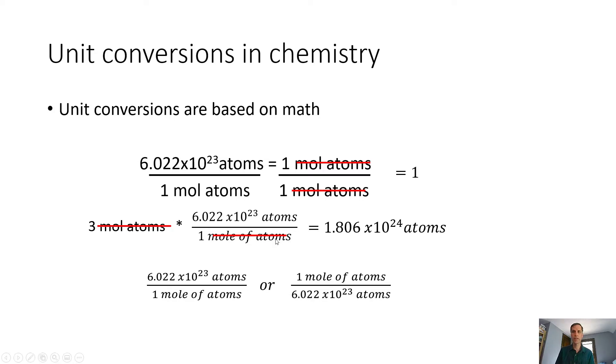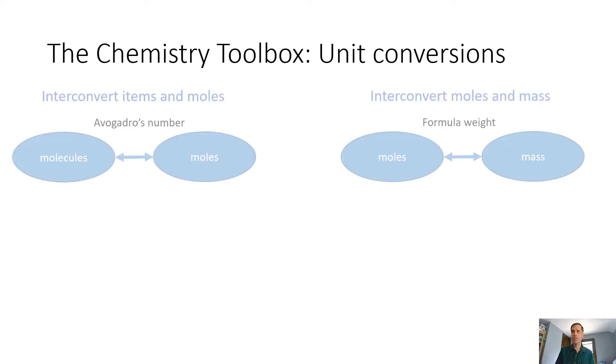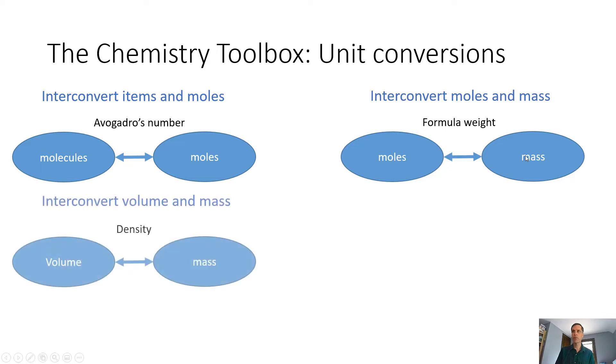This actually goes into what I tend to think of as the chemistry toolbox. How do we use unit conversions? We can interconvert between items and moles using Avogadro's number. We've also previously seen that we know what formula weight is. That allows us to interconvert between moles and mass. These are things that we always have at our disposal.